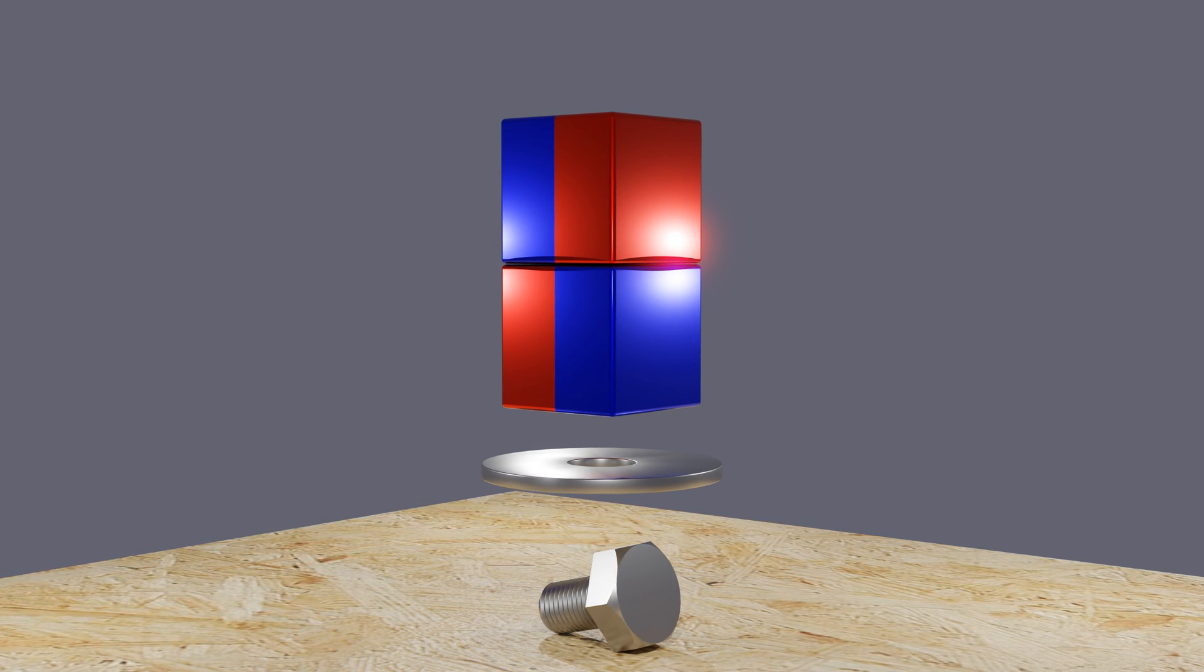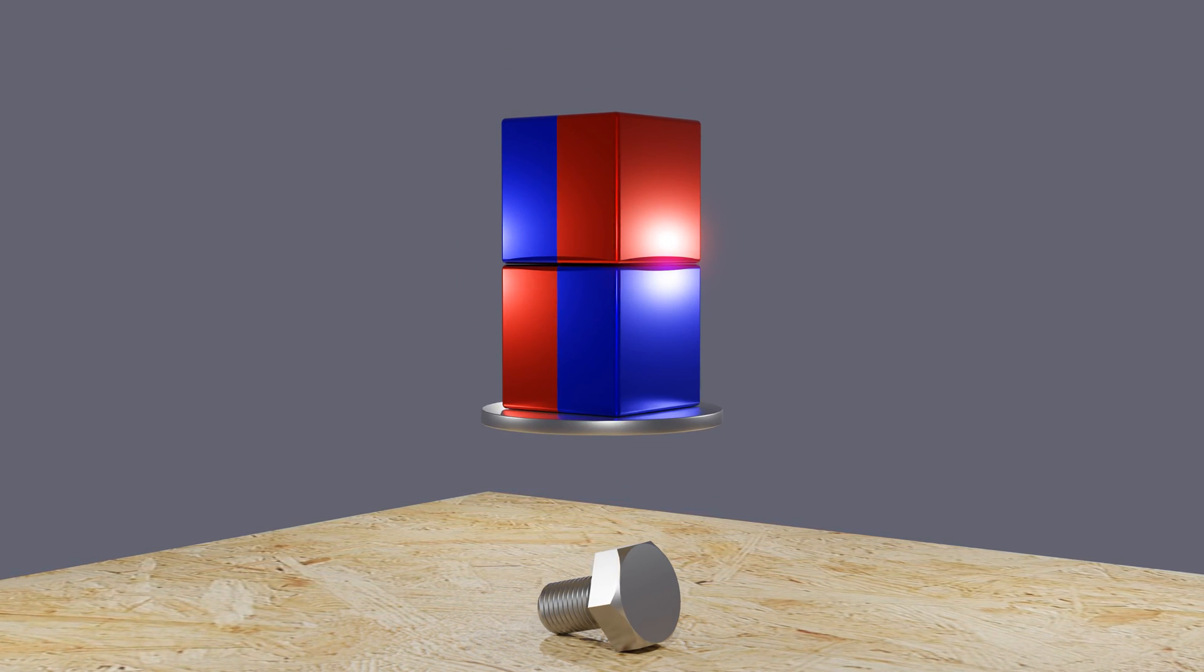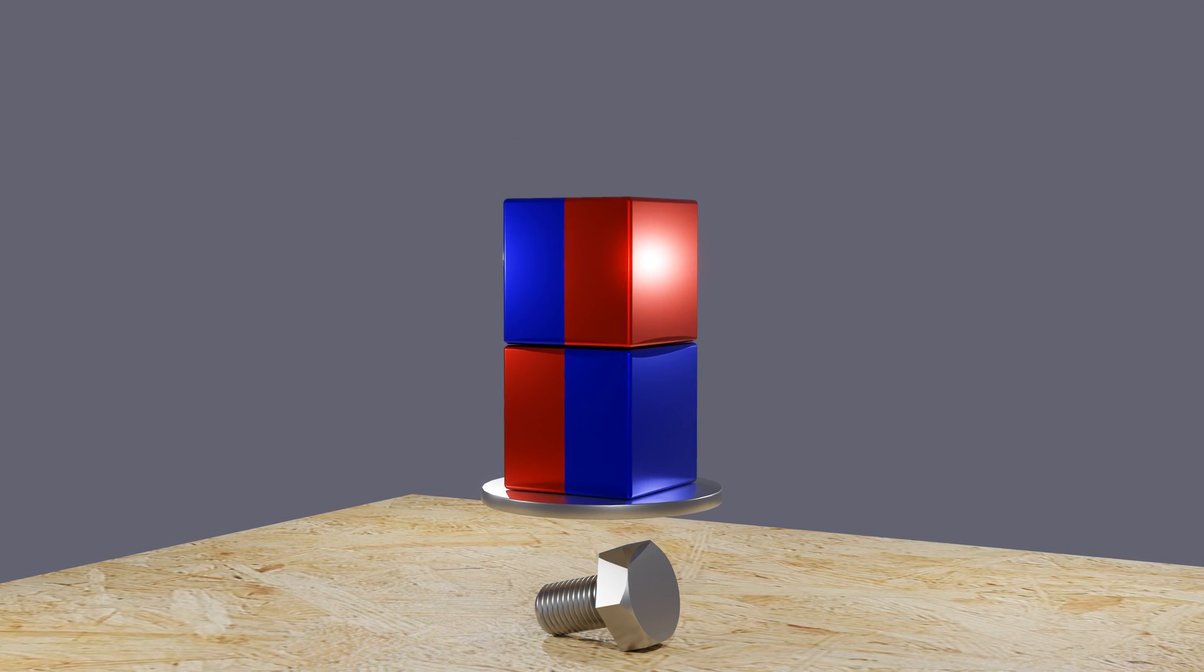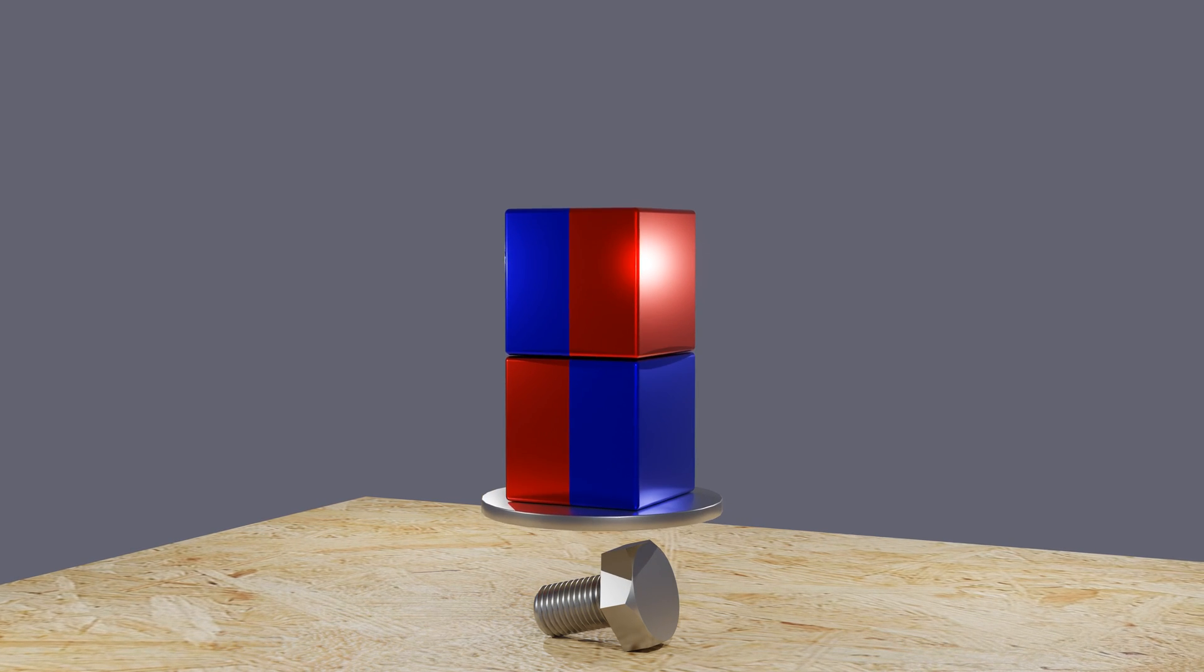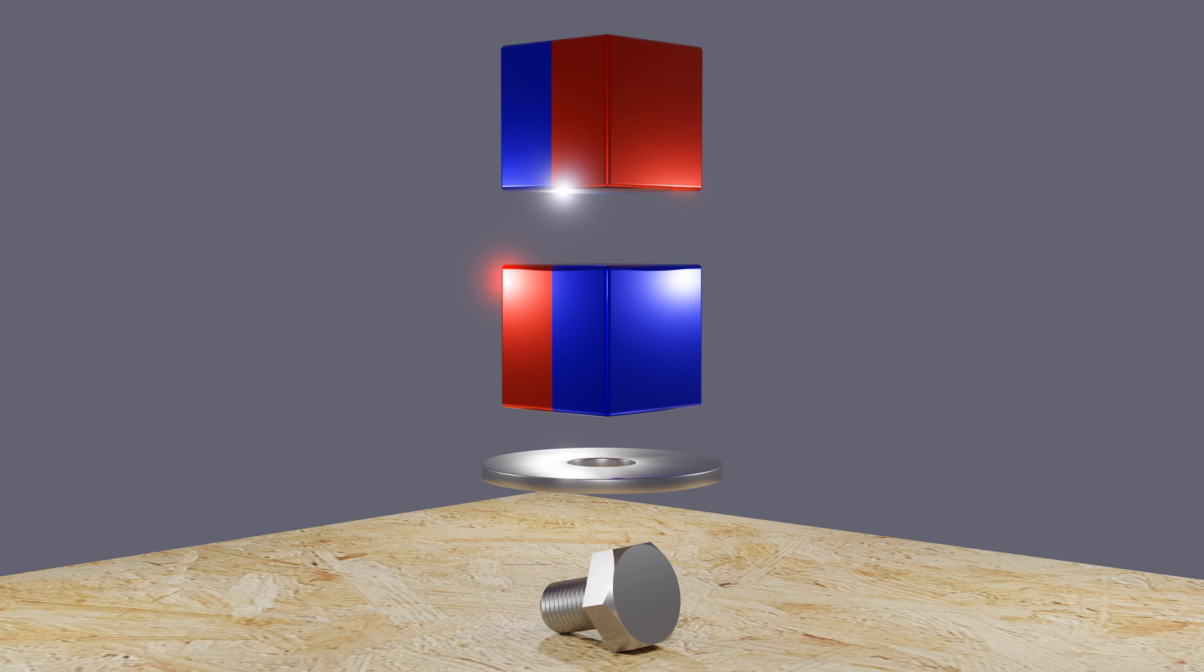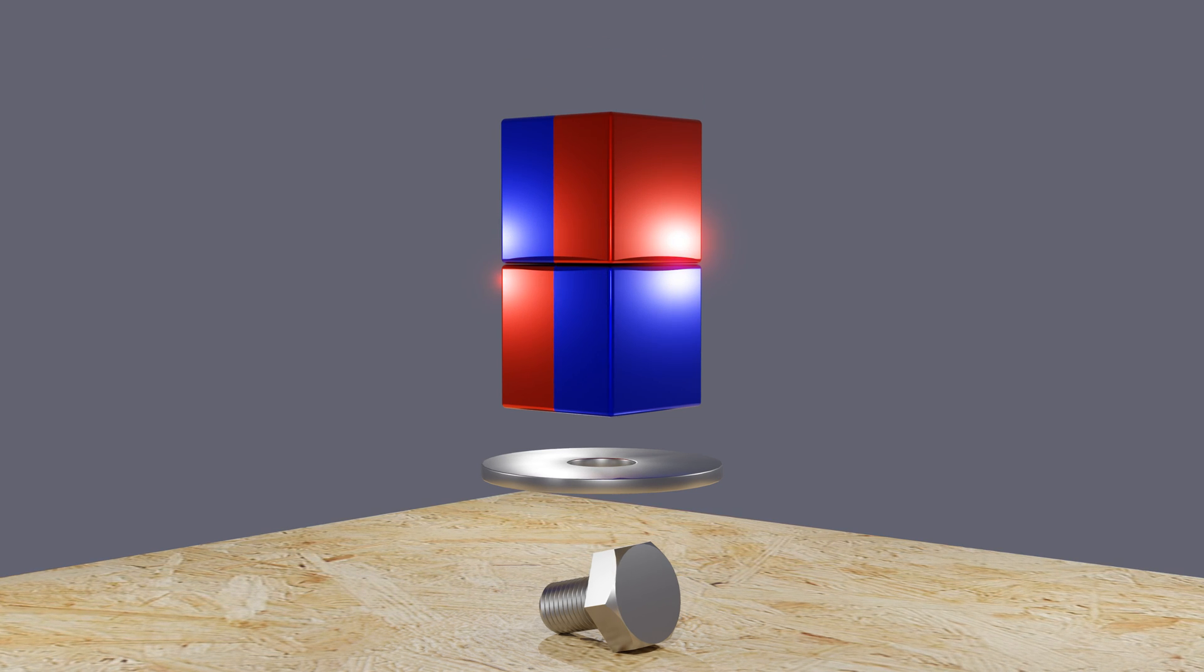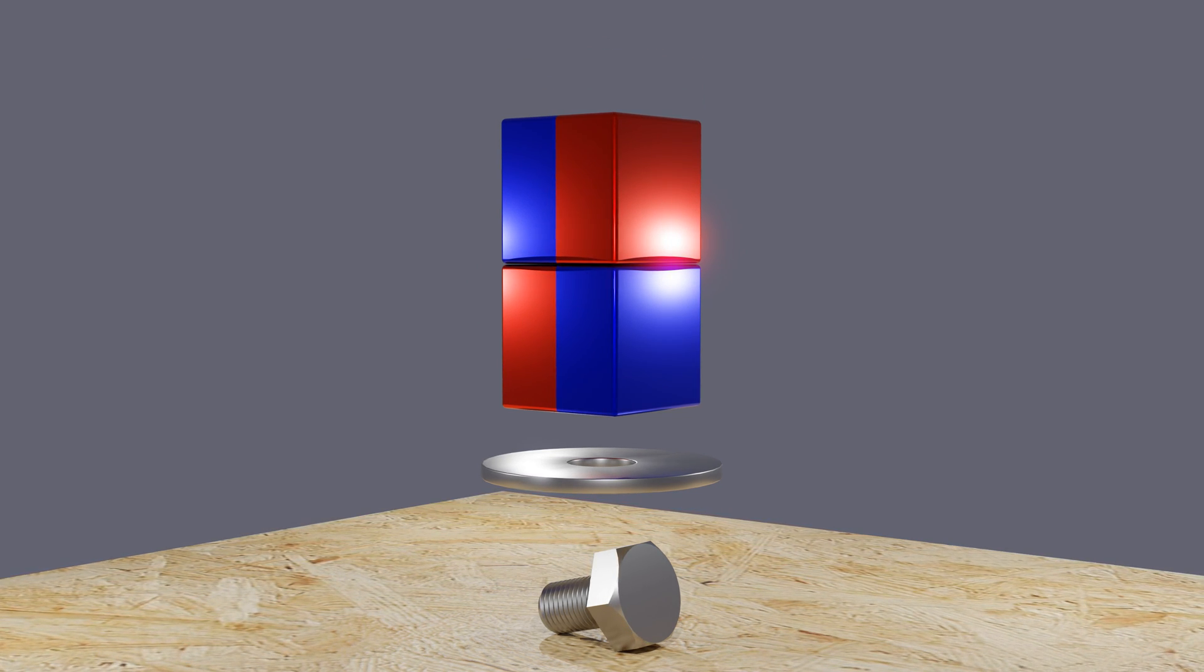We now look inside the device and see what is happening here. Two magnets are twisted against each other, so that opposite poles can attract each other. And what's more, they also attract other metal objects across their polar alignment, like this metal disc.